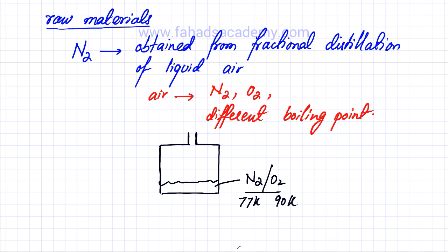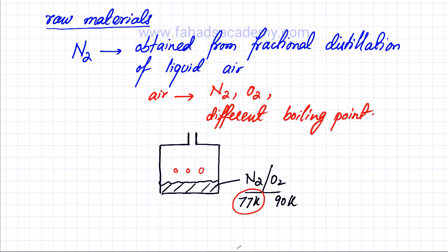Once air has been liquefied, you start warming the mixture. Since nitrogen has a lower boiling point, it starts to evaporate first, and you can collect nitrogen. This is how fractional distillation works — you can then cool the gases obtained again to get liquid nitrogen. That's how nitrogen is obtained.